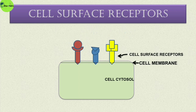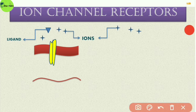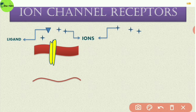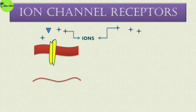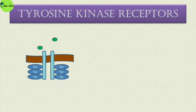For ion channel receptors: suppose this is a target cell with a cell membrane containing a closed ion channel, with many ions and ligands present outside. Due to the binding of a ligand, the ion channel gets opened and ions can now easily enter the cell, changing the membrane potential.